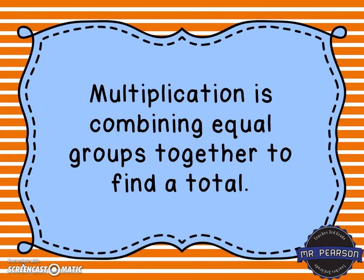Multiplication is combining equal groups together to find a total. We'll take the groups that have the same number in them and combine them together to find out how many we have all together.